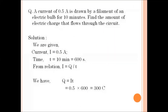Next we have a numerical based on electric current. A current of 0.5 ampere is drawn by a filament of an electric bulb for 10 minutes. Find the amount of electric charge that flows through the circuit. We are given current = 0.5 A and time = 10 minutes = 600 seconds. From the relation Q = I × t, on multiplying current and time, we can calculate the total charge that flows through the circuit.